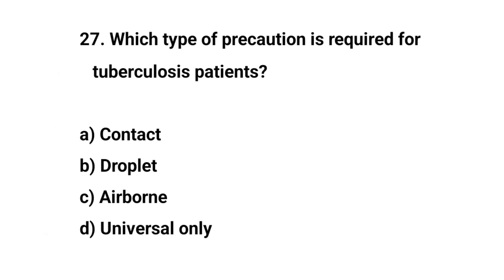Question No. 27. Which type of isolation is required for tuberculosis patients? Right answer is C. Airborne precautions.